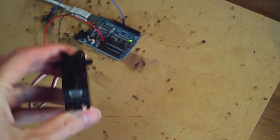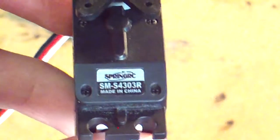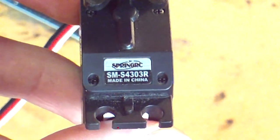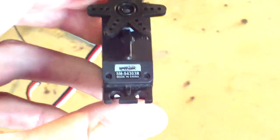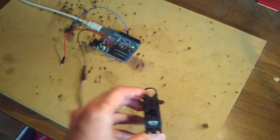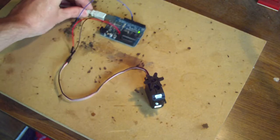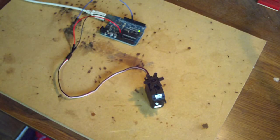Just so you can see the model number here. I'll just zoom in. It's an SM-S4303R. It's the lower end of this brand's line of servos, continuous rotation servos.